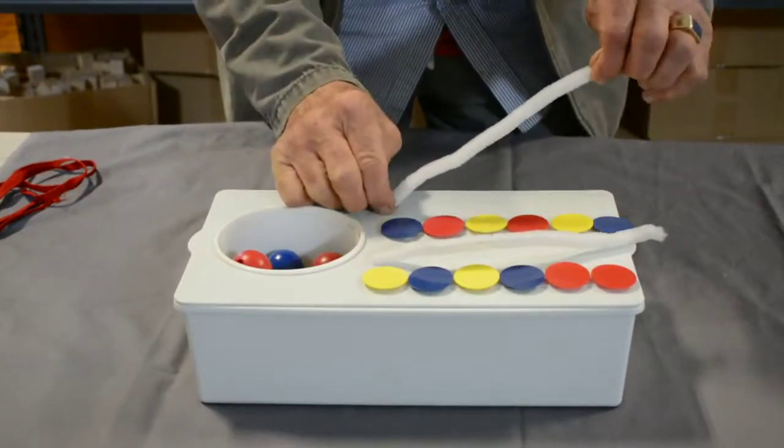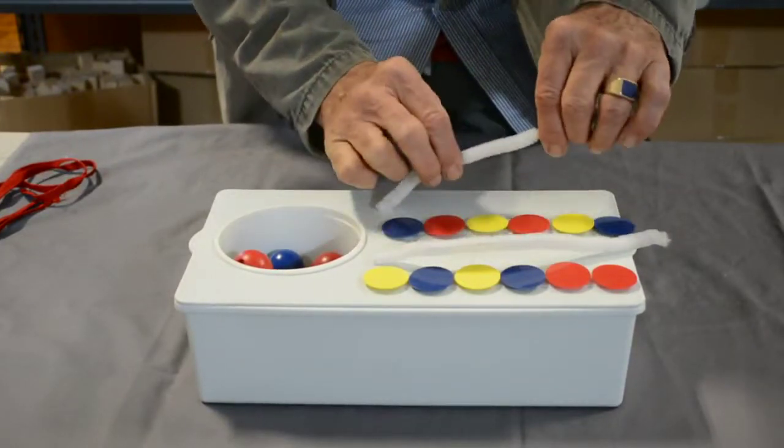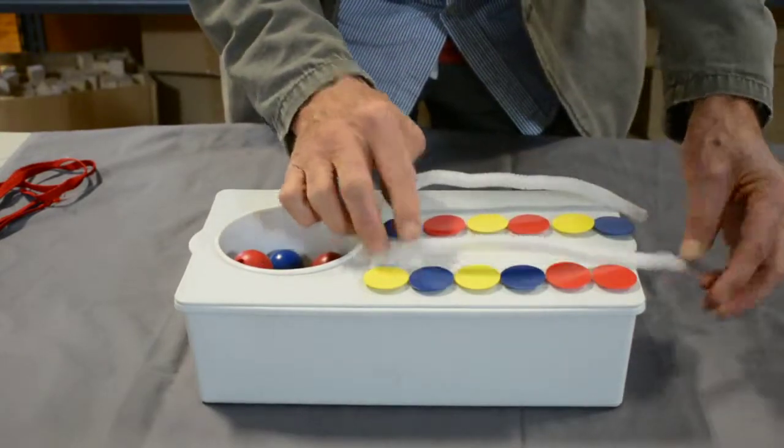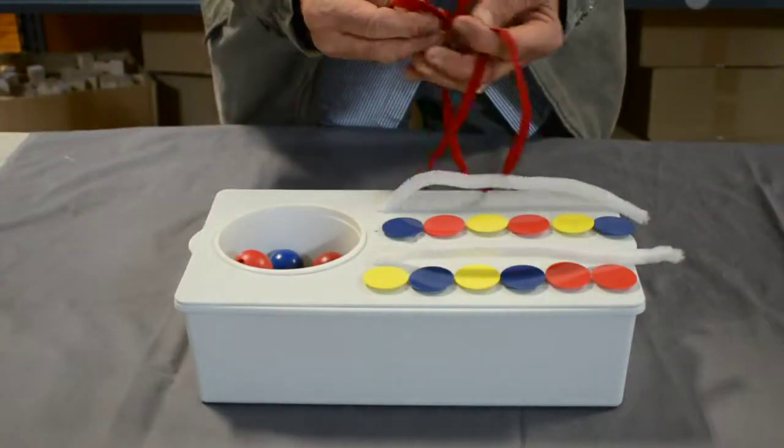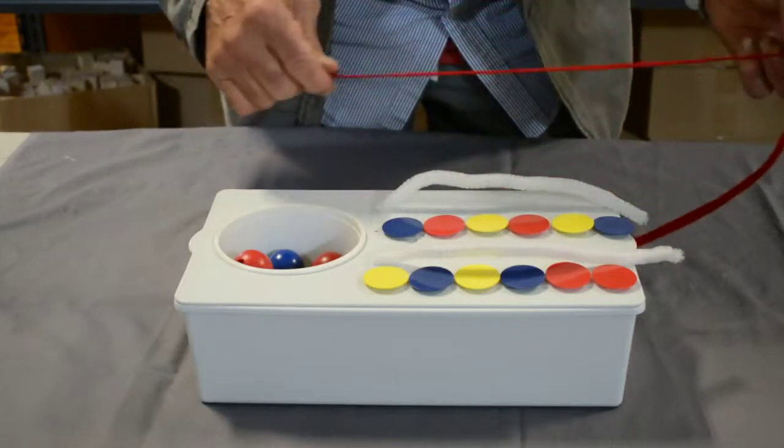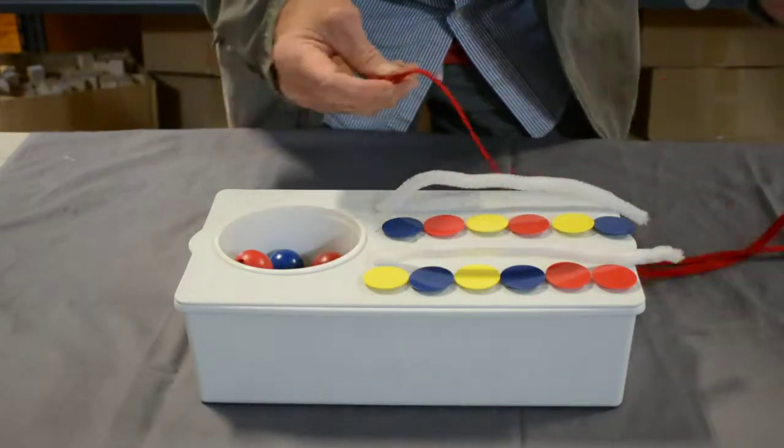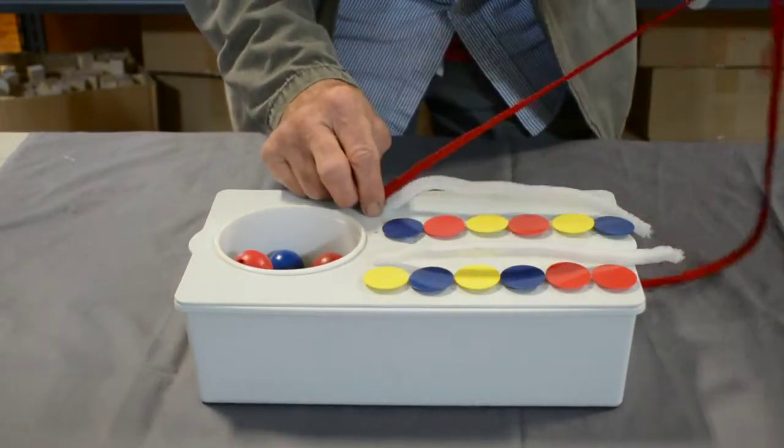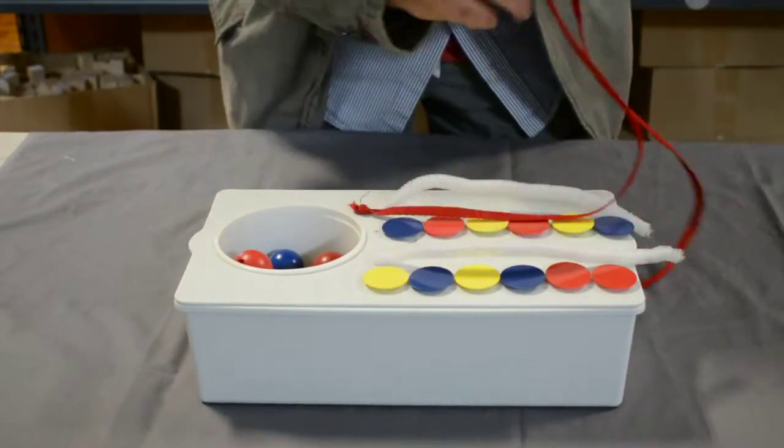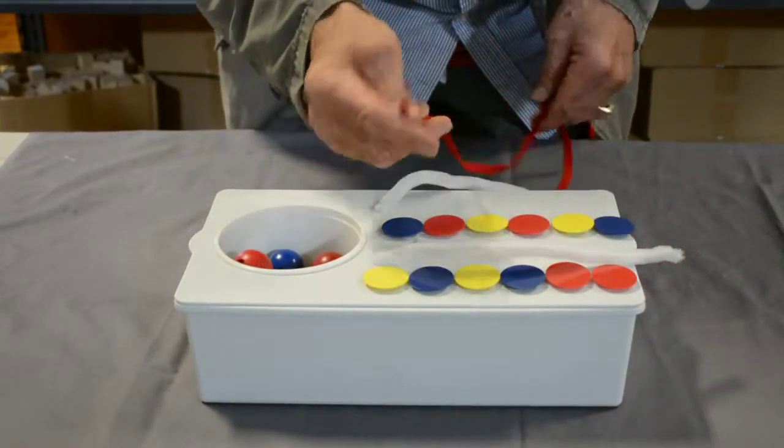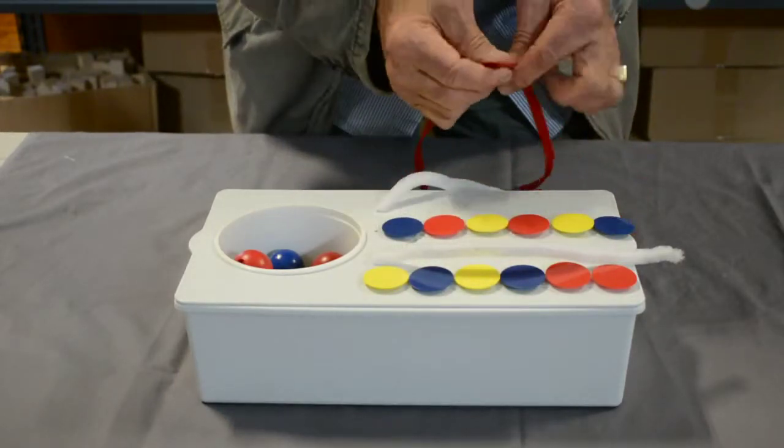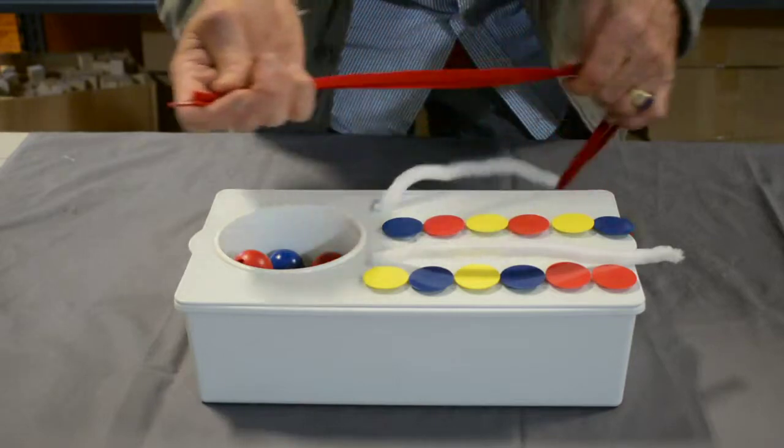You can put in the pipe cleaner, which is stiffer and a little easier to manipulate. We also have the option of using shoelaces, which again, there's a knot on the end as there is on the pipe cleaner to allow it to stay in place, but it's a little harder to manipulate the shoelace. It's floppy and so it requires greater fine motor dexterity.